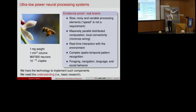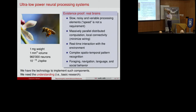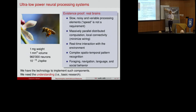For brains, speed is not a requirement — actually going slow is a requirement — and I'll show you that you can do robust, low-latency computation by using slow parallel elements. Brains and bees compute using massively parallel distributed computation with local connectivity. Wiring is a big problem in technology too, but brains are optimal for minimizing wiring. With this technology, these marvels in our brain can do real-time interaction with the environment, complex spatial-temporal pattern recognition, and even with less than a million neurons you can have cognitive behaviors: foraging, navigation, social behaviors.